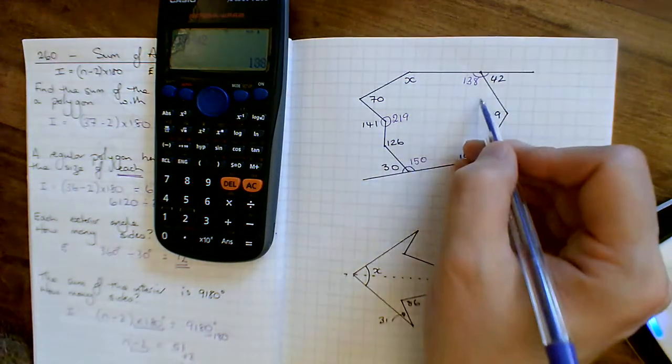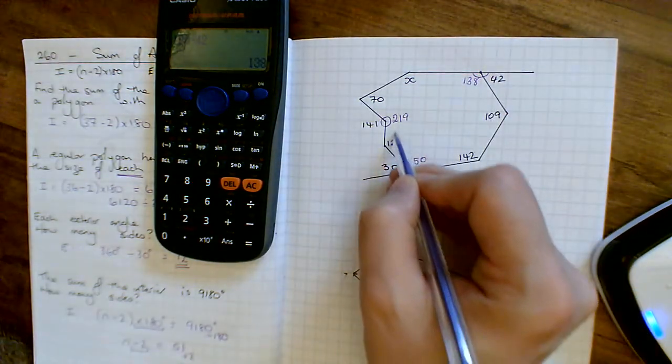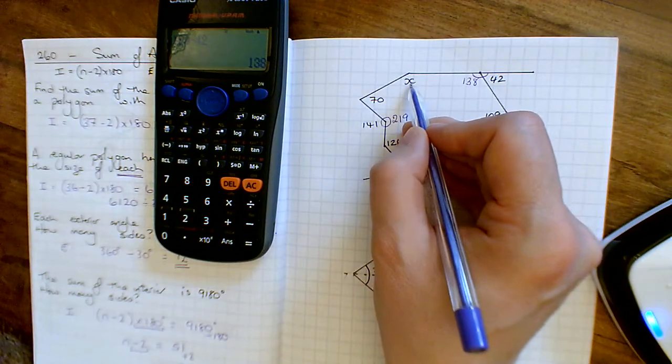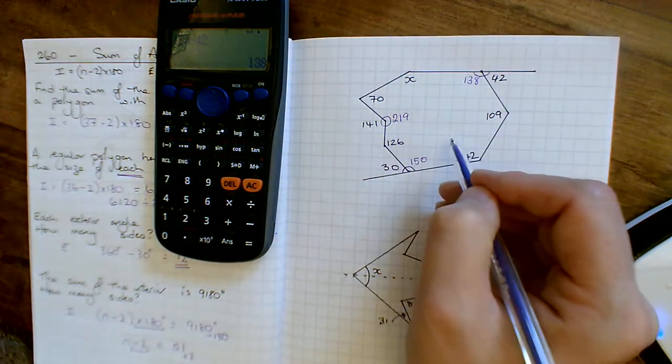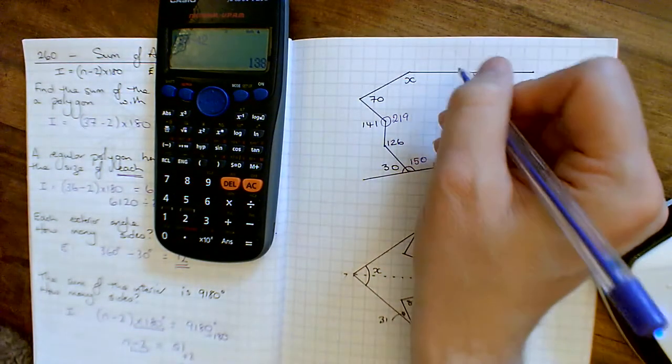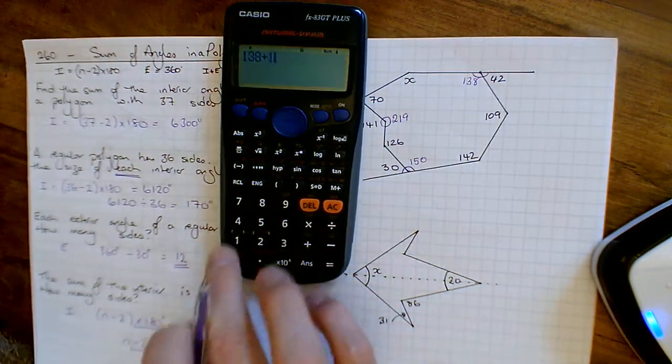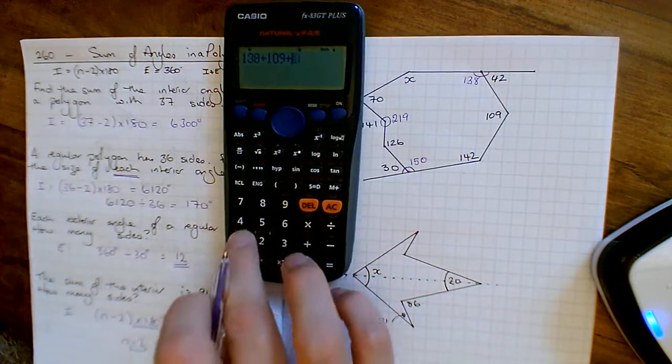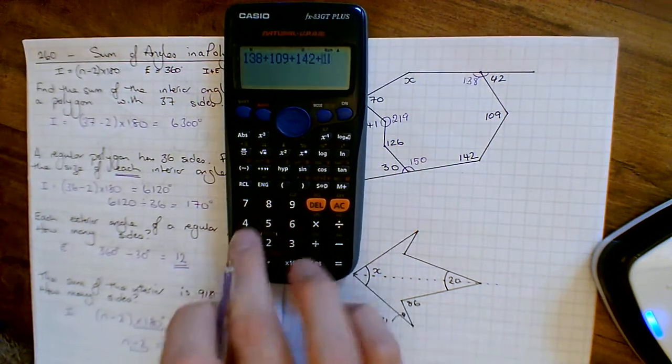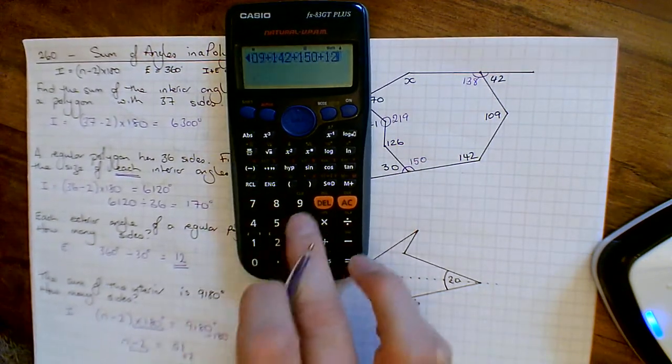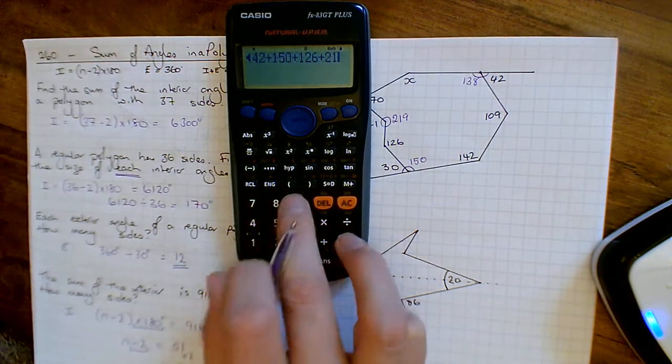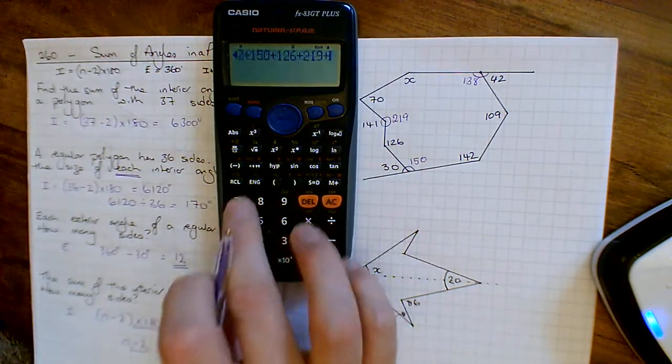Next job is I've got to find out, because I've got all the angles now on the inside except this one. So if I can figure out what they're supposed to add up to, then I can get that one. So far, let's see what I've got. I've got 138 plus 109 plus 142, add on the 150, add on the 126, add on the 219, and then add on the 70 at the end there.